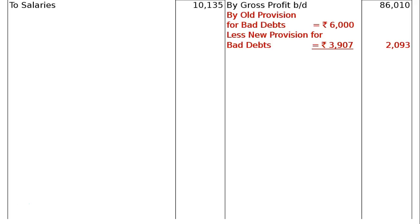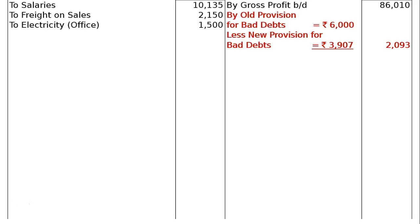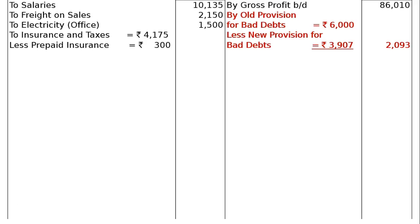Then to salaries Rs. 10,135. Then to freight on sales Rs. 2,150. To electricity for office (1/5) that is Rs. 1,500. To insurance and taxes Rs. 4,175, less prepaid insurance Rs. 300.